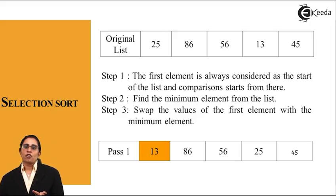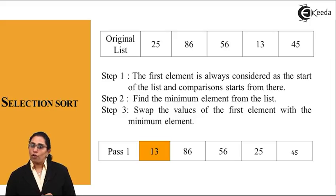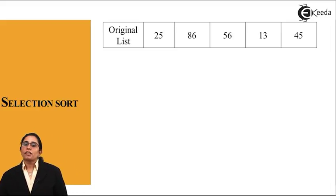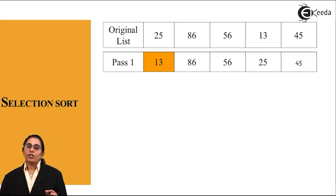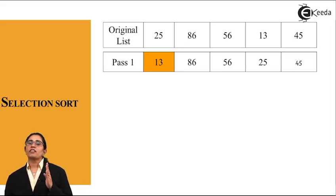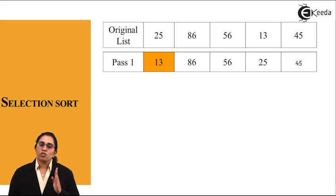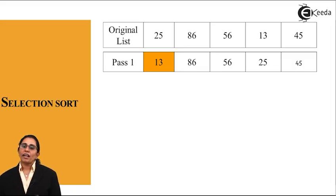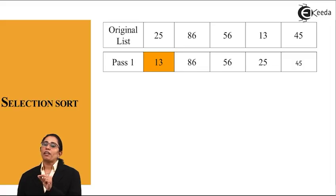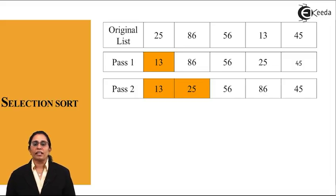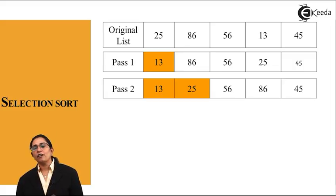This will now be the input list for pass 2 of selection sort. This was my original list, this is my pass 1 list: 13, 86, 56, 25 and 45. 13 is fixed at its location. I start searching from 86 for the minimum element in the array and I find it at location number 4 with element 25. I swap 86 with 25. My pass 2 becomes 13, 25, 56, 86 and 45.